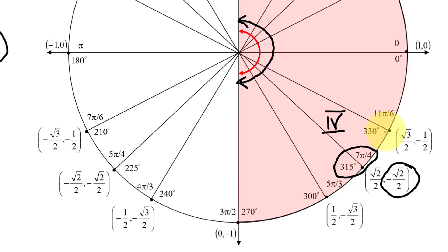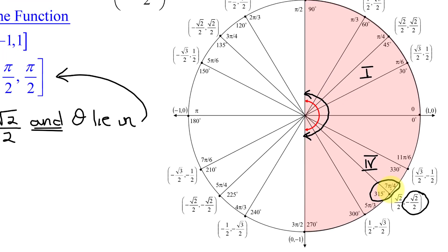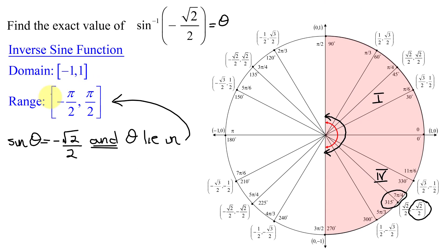But be careful, when your answer is in quadrant 4, my answer cannot equal 7 pi over 4, because that doesn't lie in the given range. So what we have to do is find the angle that rotates in this direction, a negative angle.